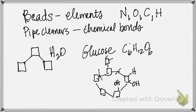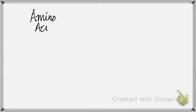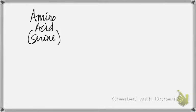Then we broke the glucose all apart and had a pile of beads. We built water, then glucose, then broke the glucose apart and used it to build an amino acid — serine. Then it said to build another amino acid, and you couldn't, because you didn't have enough elements — literally not enough beads, which represented not having the building blocks you needed.